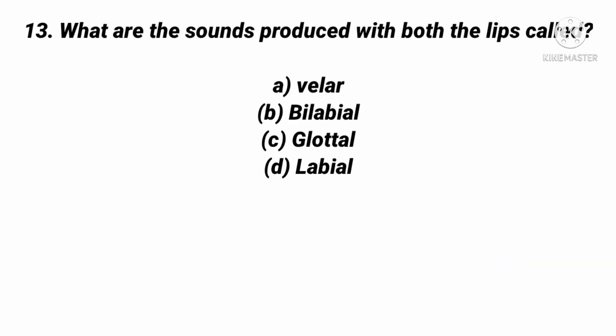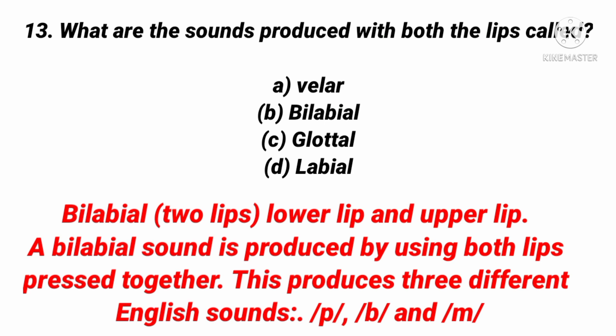The next question: What are the sounds produced with both lips called? The right answer is bilabial. A bilabial sound is produced by using both lips pressed together — lower lip and upper lip. This produces three different English sounds: p, b, and m.